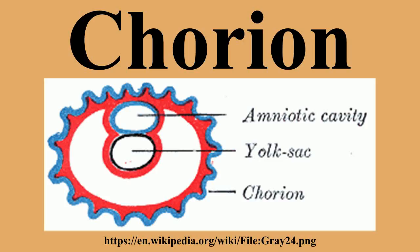Thus the placenta develops from the chorion frondosum and the decidua basalis. Monochorionic twins are twins that share the same placenta. It occurs in 0.3% of all pregnancies, and in 75% of monozygotic twins. When the split takes place on or after the third day after fertilization, the remaining 25% of monozygous twins become dichorionic diamniotic. The condition may affect any type of multiple birth, resulting in monochorionic multiples.